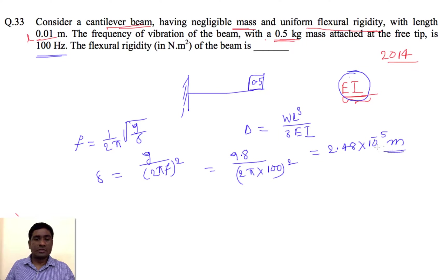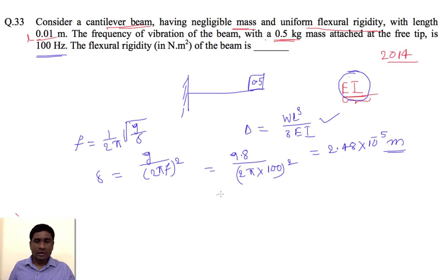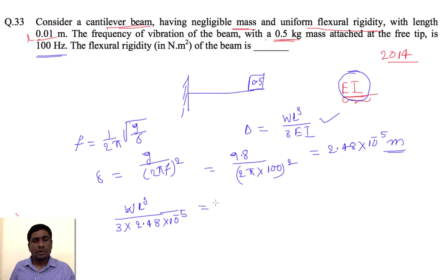We got the value of delta. Substituting into the deflection formula delta = WL³ / 3EI, we can rearrange to solve for EI: EI = WL³ / (3 × 2.48 × 10⁻⁵).